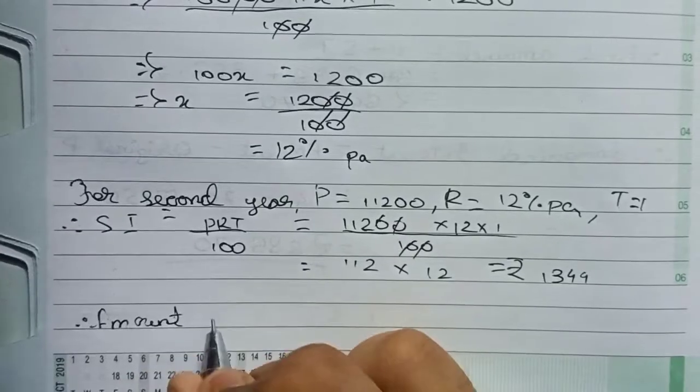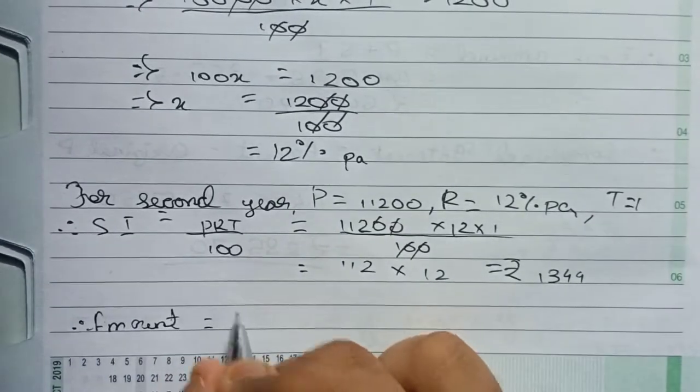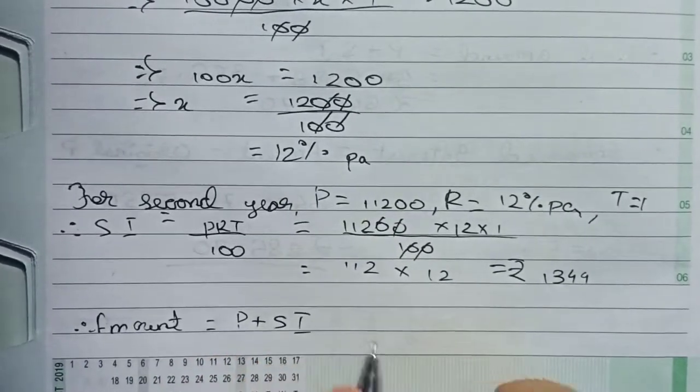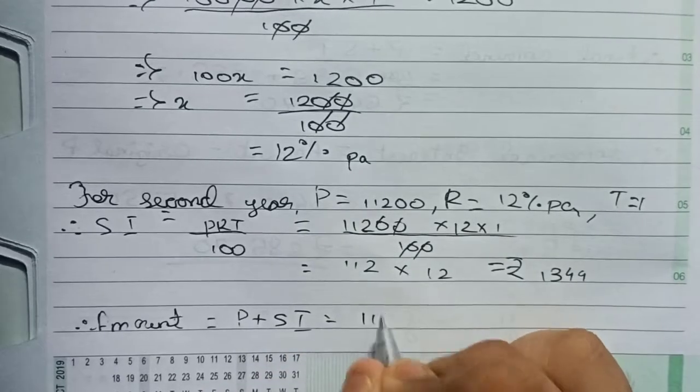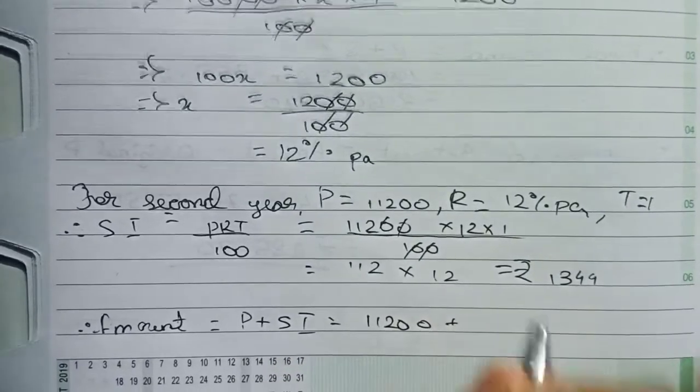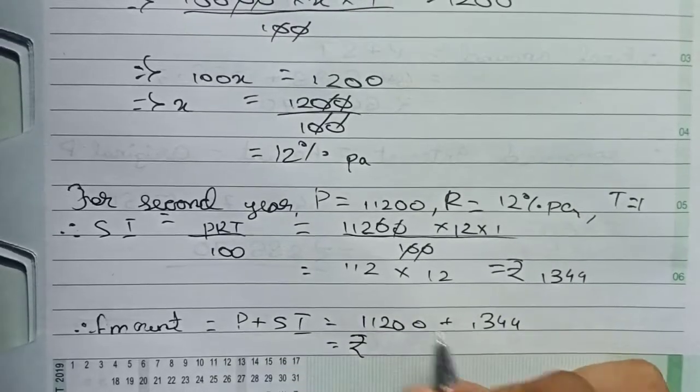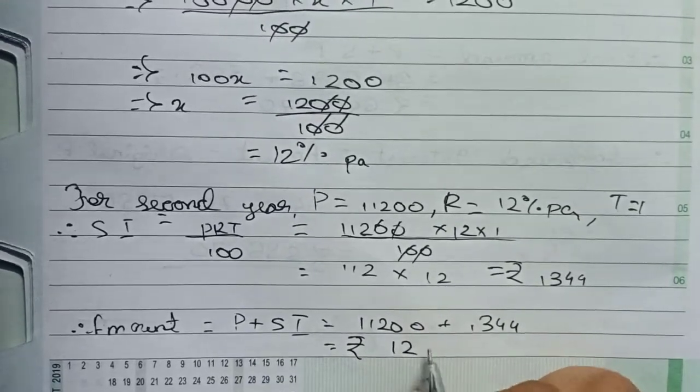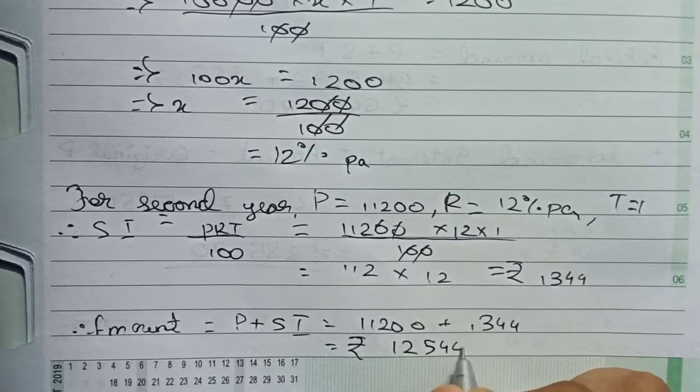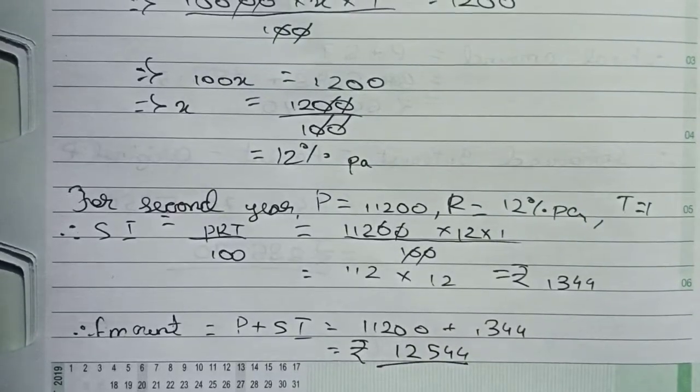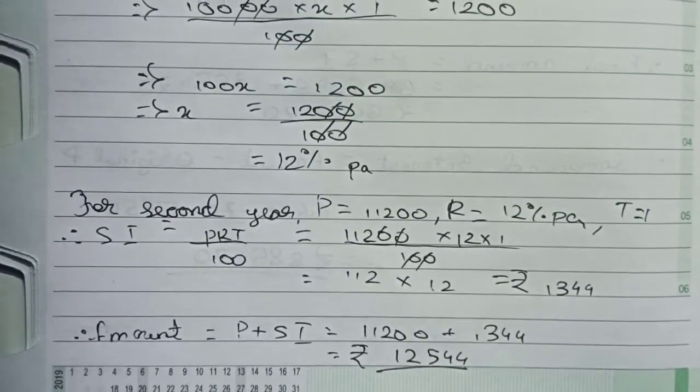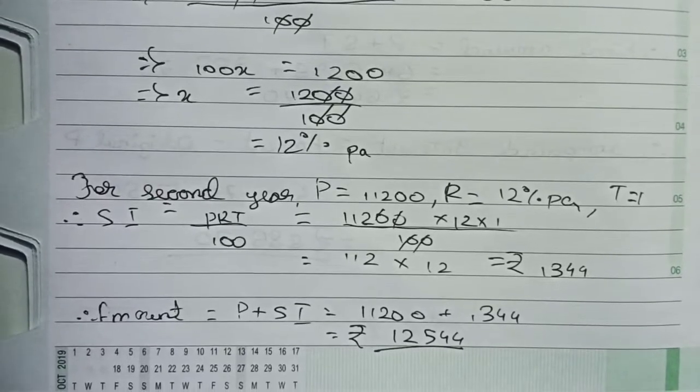The amount formula is principal plus SI, so 11,200 + 1,344 = rupees 12,544. This is the final answer for this question. Thanks for watching this video, and please subscribe to my channel for more solutions.